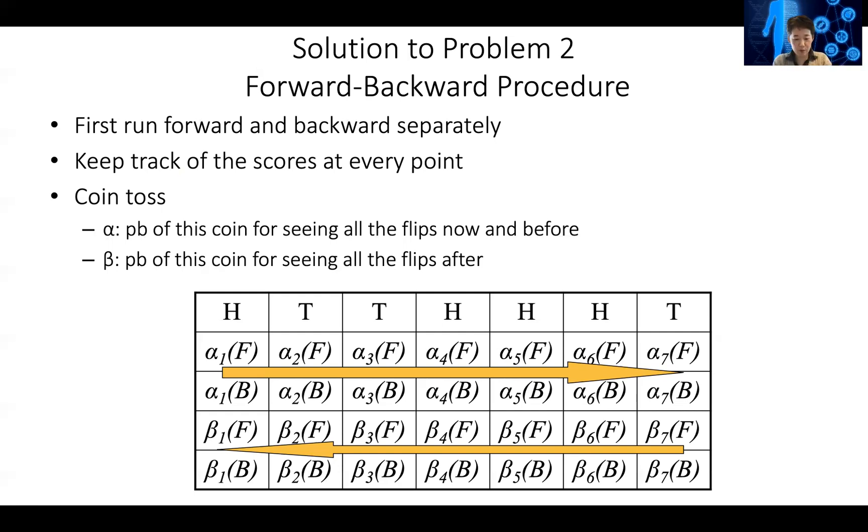At this point, at this location where I'm seeing a T, what's the probability I'm using a fair coin now in order to see this tail and all the flips before. You calculate all the alpha numbers. Then we run the backward procedure to calculate the beta numbers, which is the probability of using this coin in order to see everything after, all the flips after.